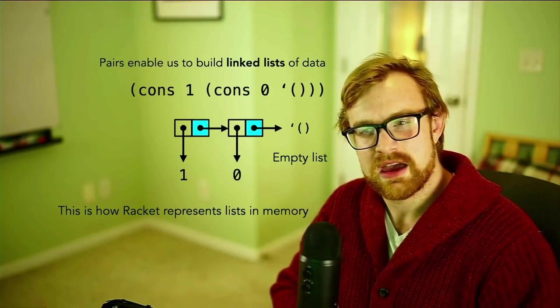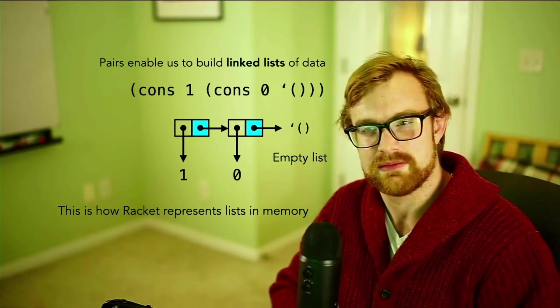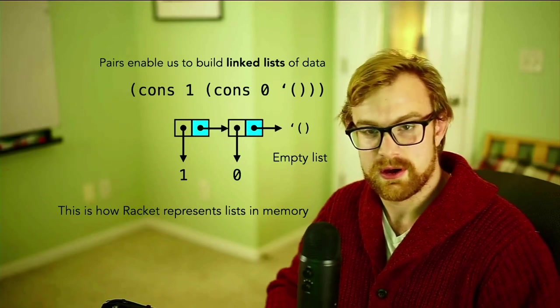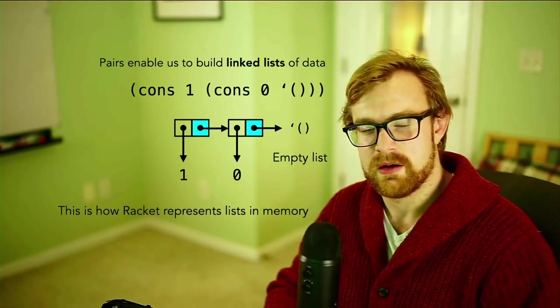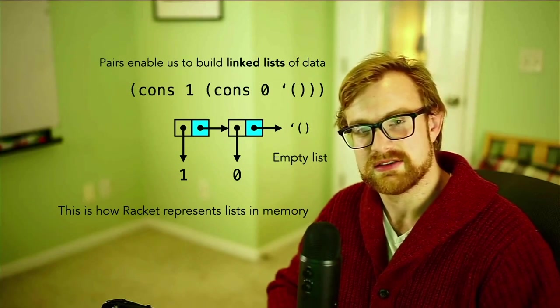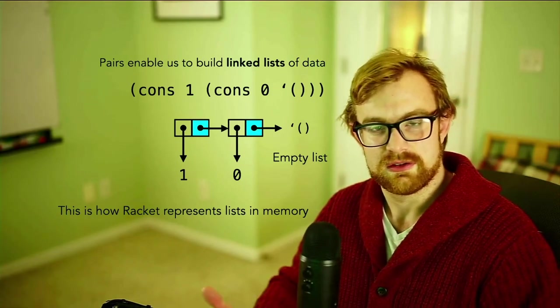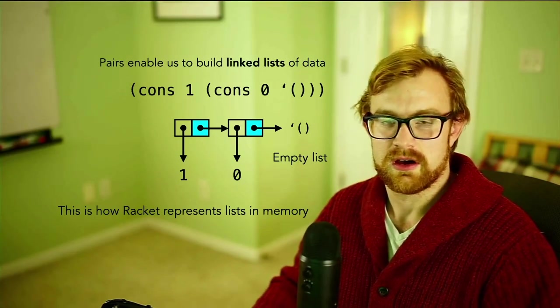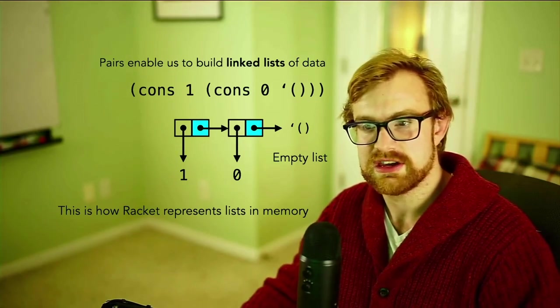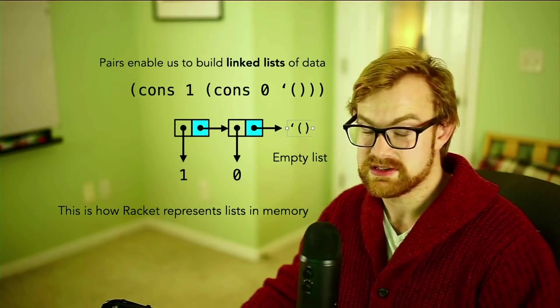Now cons cells and pairs, they enable us to build big linked lists of data of arbitrary size by doing this nesting thing that we talked about in the past few lectures. So I've got this list right here: cons one, cons zero, empty list. We can kind of think about it from the right to the left side as being starting with the empty list and then cons down to that is zero. So then we've got zero, its cdr is the empty list. That's the list of zero. Then cons one with the cdr is that list. So we've got one cons zero cons empty list.